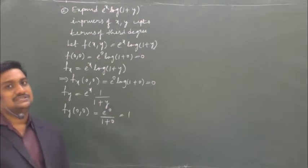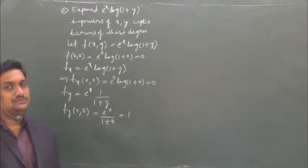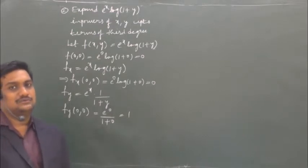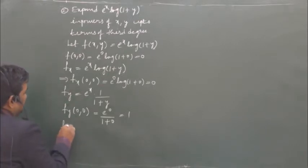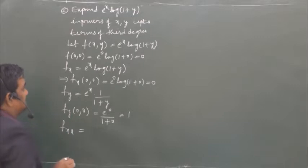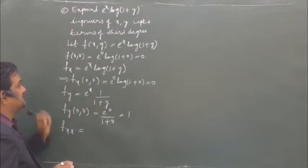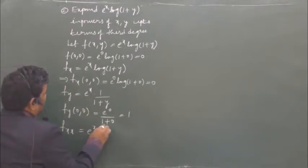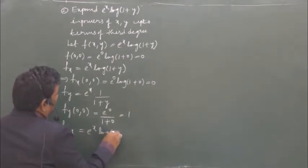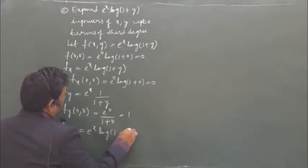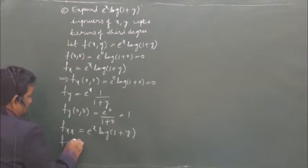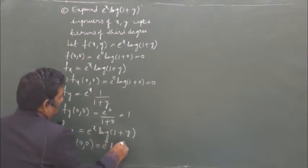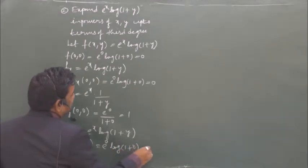The next term in the expansion is (1/2!) · x² · fxx at (0,0). Now let us find fxx, which is the derivative of fx with respect to x. It is e^x · log(1+y). Evaluating at (0,0): e^0 · log(1+0) = 0.